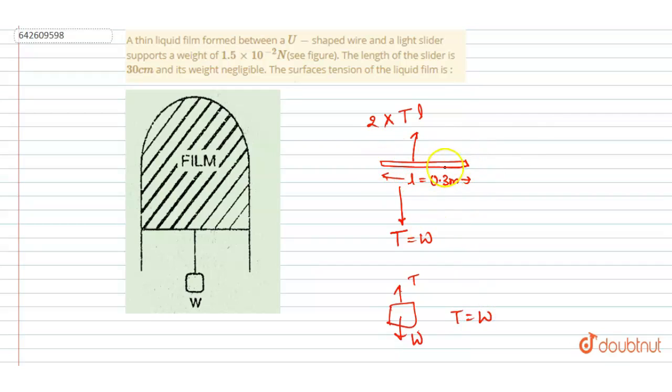From here, we can write T = W/2L. If we put the value of W here, that is W divided by 2L.